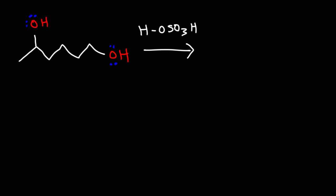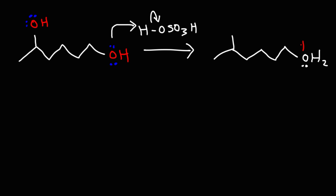Now let's focus on protonating the primary alcohol instead of the secondary alcohol and see how the mechanism changes. The leaving group won't just leave on its own, because if it does, it's going to leave behind an unstable primary carbocation intermediate. Primary substrates don't favor an SN1 reaction, so this is not going to be the most likely scenario. Instead, the oxygen will act as a nucleophile and attack the primary carbon, which is highly accessible, kicking out the leaving group — this reaction resembles an intramolecular SN2 reaction.